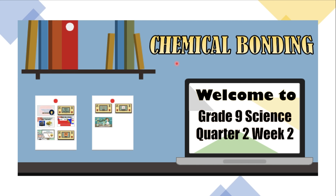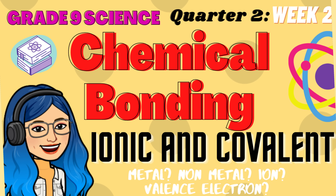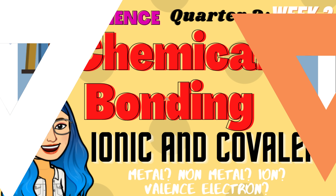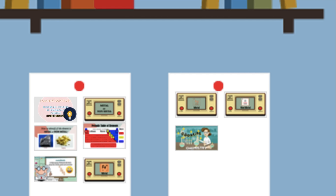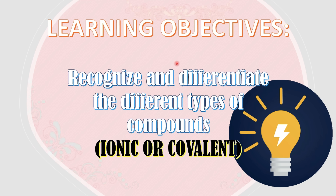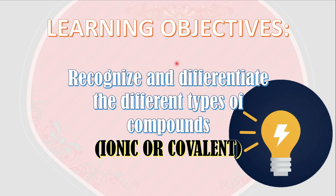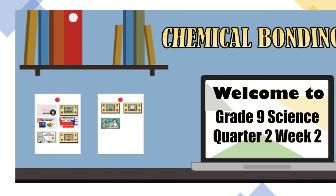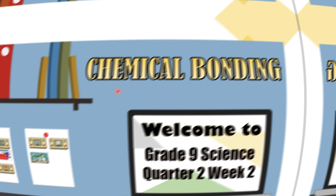Hi peeps! Welcome back to Maestrang Techie YouTube channel. Another week, another learnings in science. Week 2 is about chemical bonding — a very interesting topic. At the end of this video lesson, you are going to recognize and differentiate the different types of compounds such as ionic and covalent and their properties. Without further ado, let's get started with our new lesson.